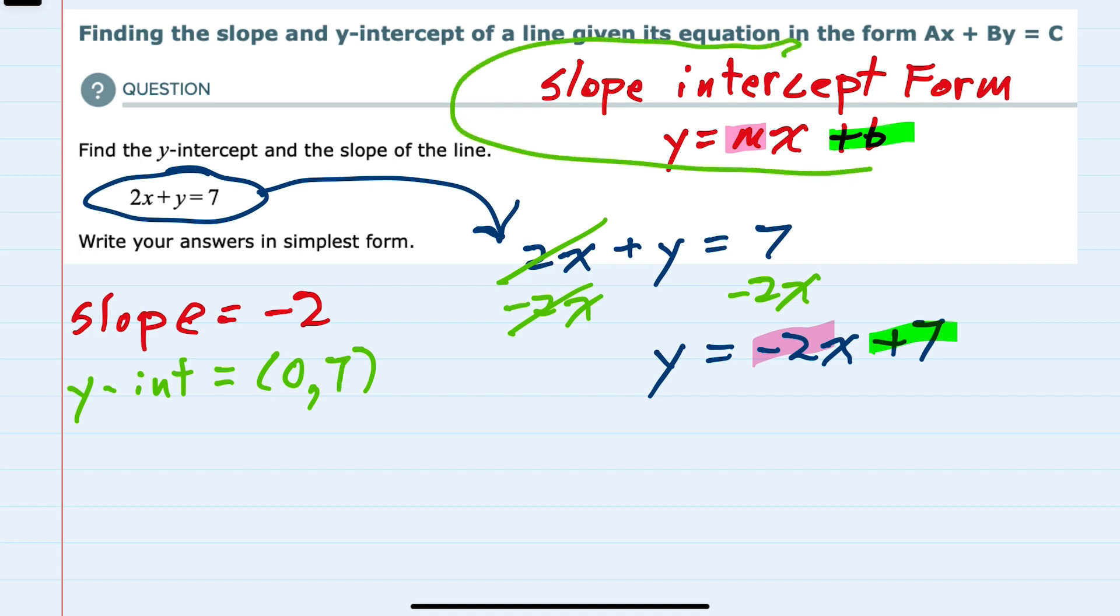So by writing the equation in slope-intercept form, it was straightforward to identify both the slope and the y-intercept.